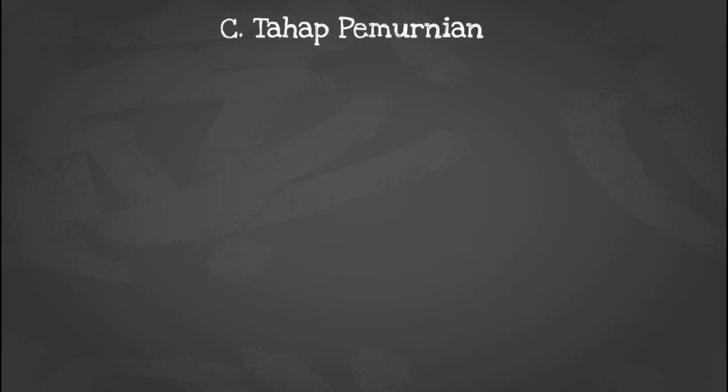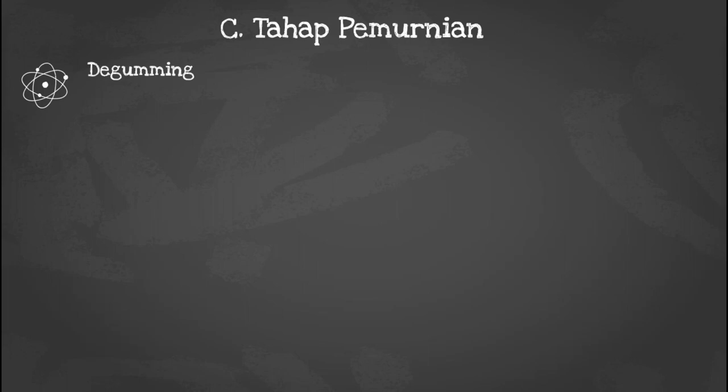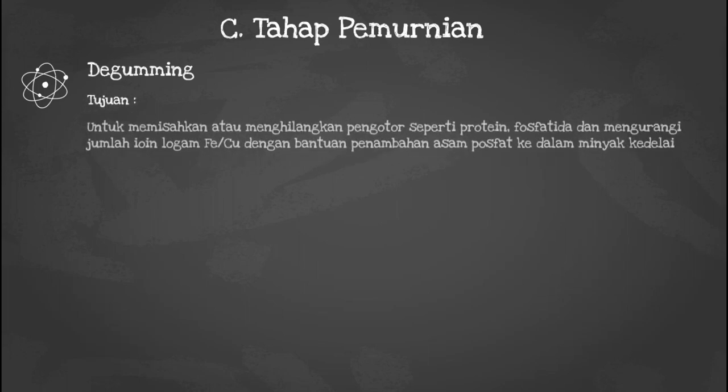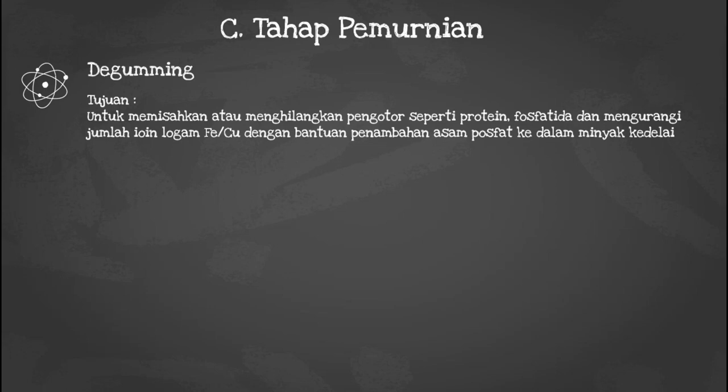Tahap terakhir adalah tahap pemurnian. Proses pertama pada tahap pemurnian adalah degumming. Tujuan dari degumming adalah untuk memisahkan atau menghilangkan pengotor seperti protein, fosfatida, dan mengurangi jumlah ion logam Fe maupun Cu (besi ataupun tembaga) dengan bantuan penambahan asam fosfat.